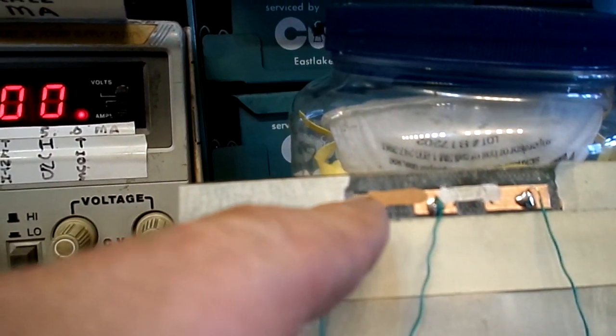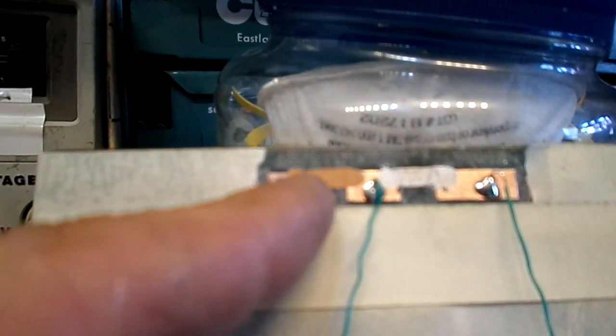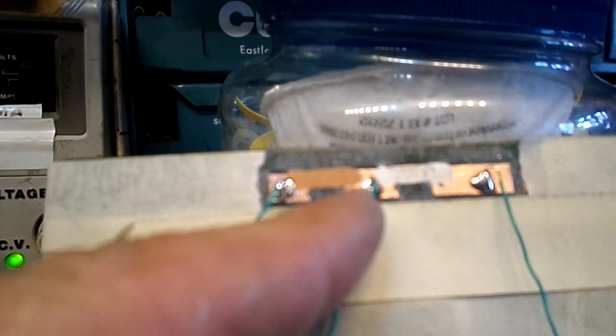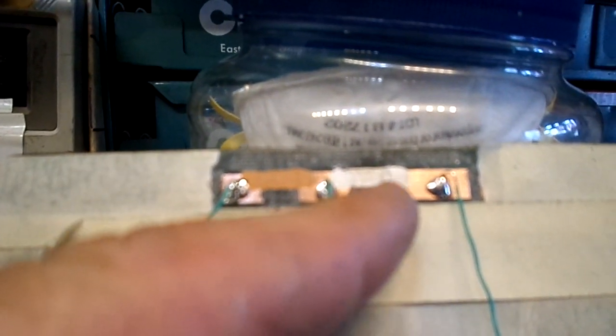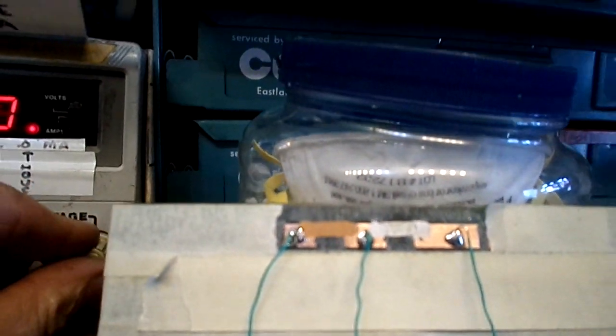I wanted to see what would happen if I applied current across these points to see how well this conductive glue would hold up. The Permatex seemed to get pretty hot when I applied about half an amp between this point and this point here.